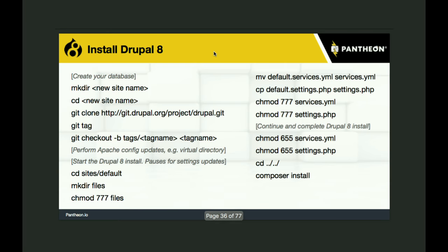Now we get to Drupal 8. These are my crib notes for installing Drupal 8 from the command prompt: cloning it right out of the Drupal Git repo, creating a new tag off of it, making the needed files structure, setting up services.yml and settings.php, preparing them to be written to by the Drupal install, then changing them back to secure settings. After all that, running Composer install, which pulls down Symfony and all the things that belong in the vendor folder.